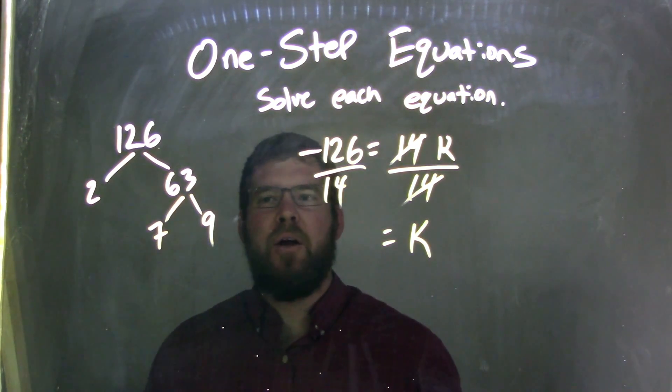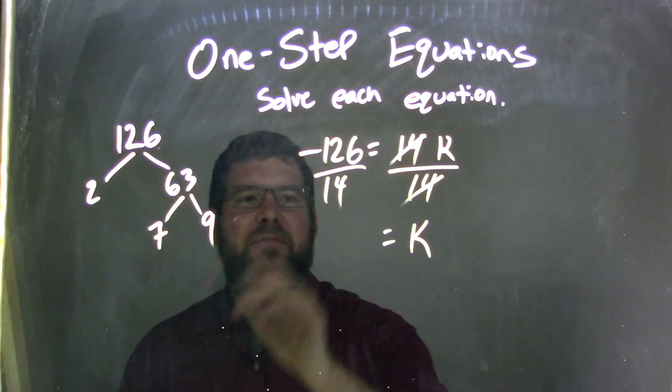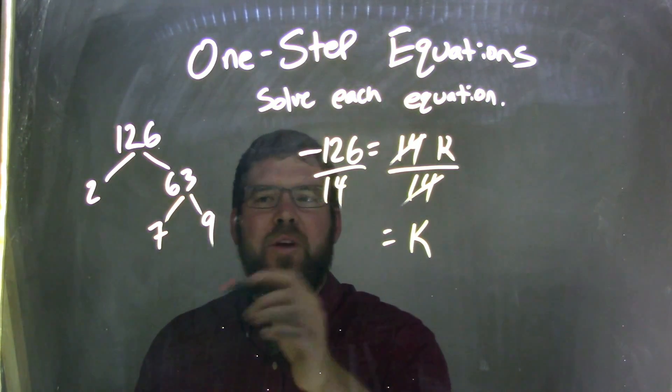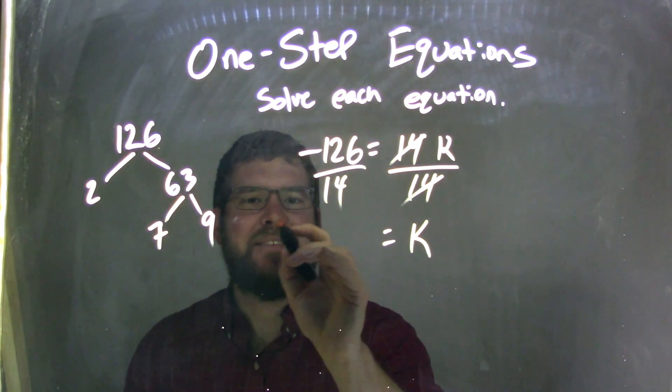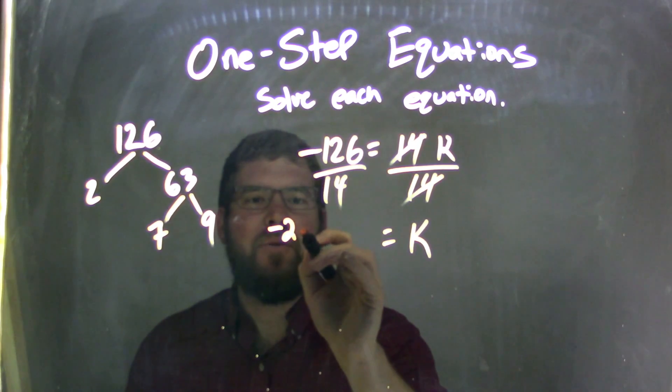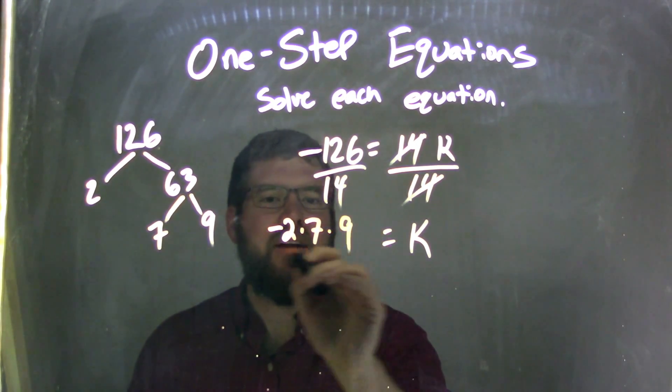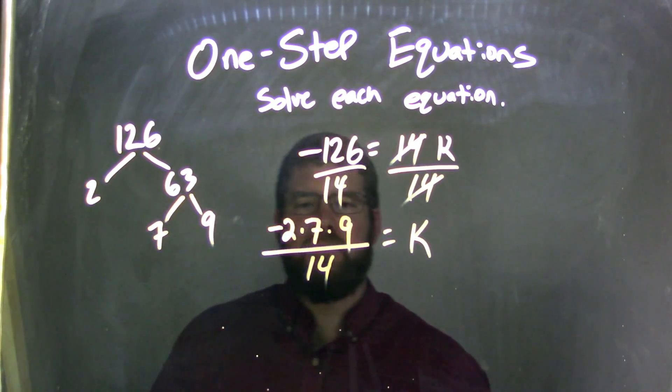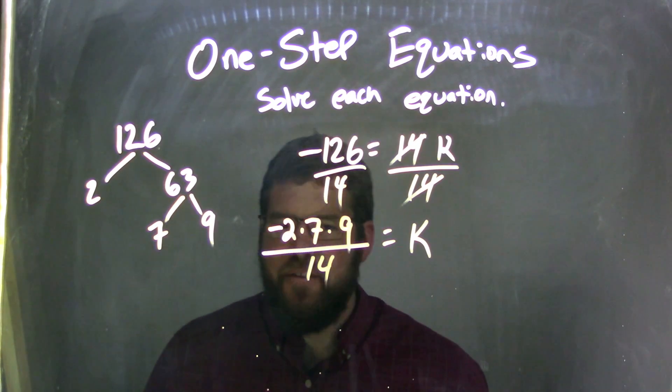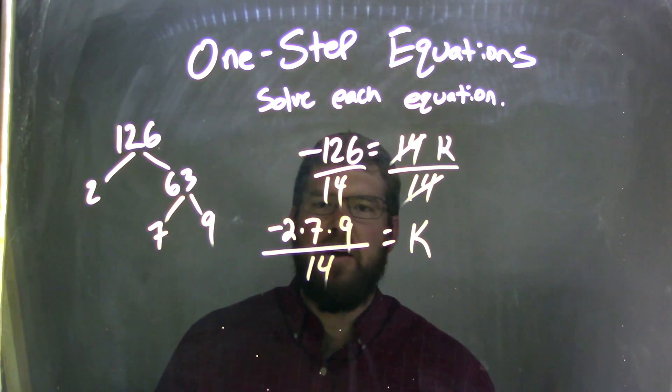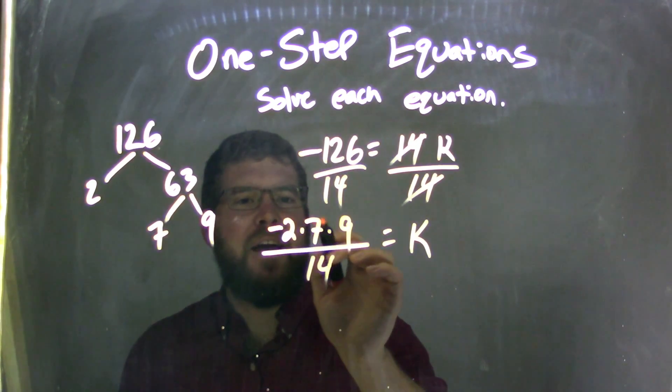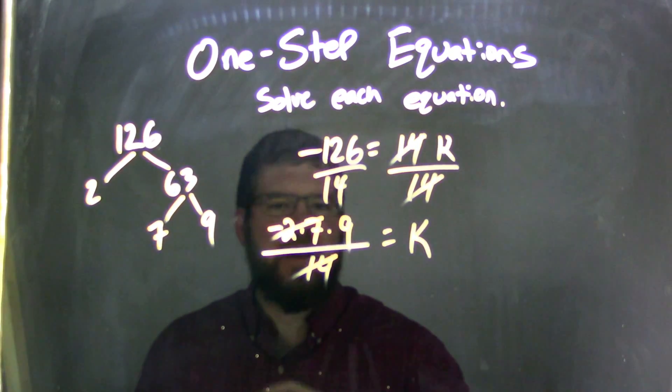And why am I going to stop there? Well, I know 2 times 7 is at 14. So, I know if I rewrote this out, the negative 126, I could rewrite to be negative 2 times 7 times 9 over 14. Well, 2 times 7 is just 14, right? So, if 2 times 7 is 14, I can cancel these out right here.